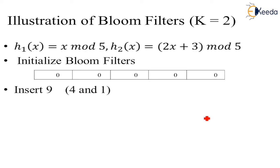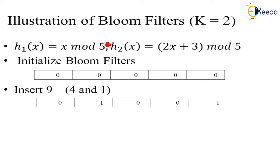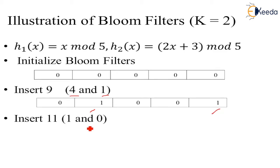Let's understand the Bloom filter by example. We have k=2 hash functions: h1(x) = x mod 5 and h2(x) = (2x + 3) mod 5. Initially the complete array is set to zero. Now inserting 9: h1(9) = 9 mod 5 = 4, and h2(9) = (18 + 3) mod 5 = 21 mod 5 = 1. So element 9 sets bits at positions 1 and 4. Now inserting 11: h1(11) = 11 mod 5 = 1, and h2(11) = (22 + 3) mod 5 = 25 mod 5 = 0. So element 11 sets bits at positions 0 and 1.